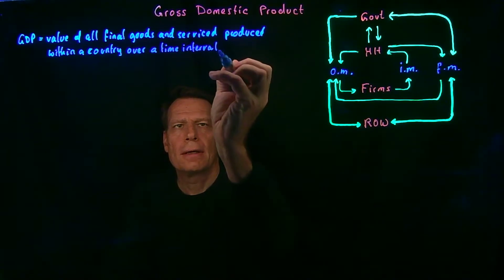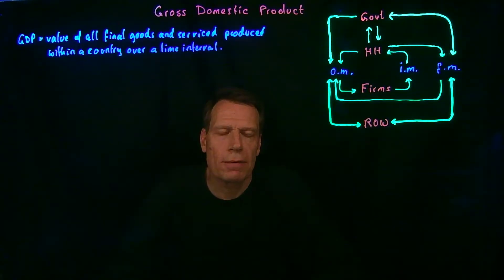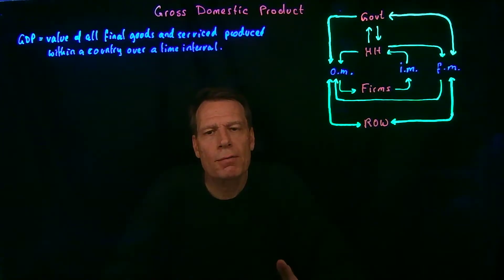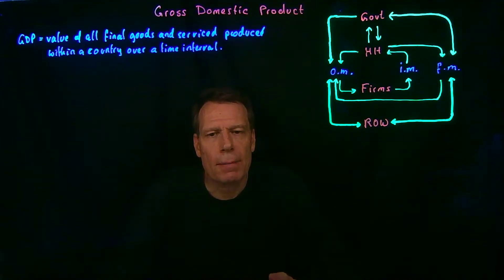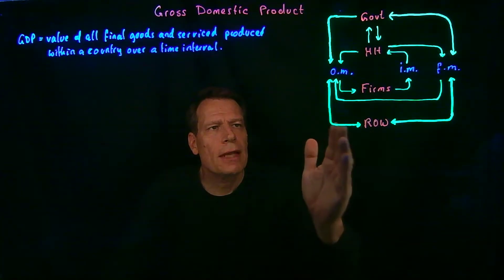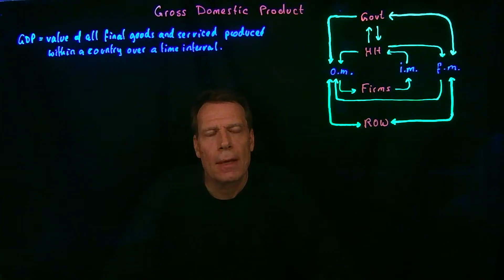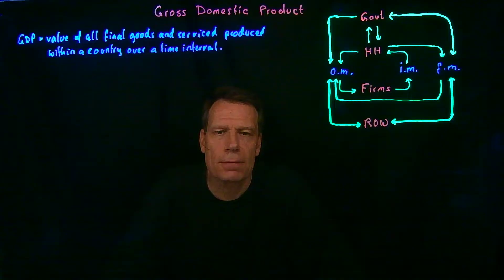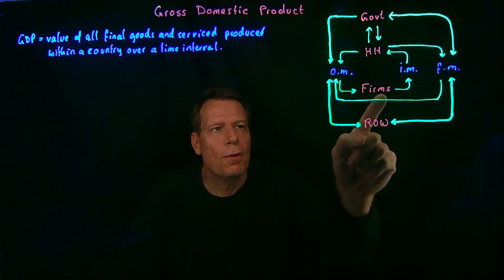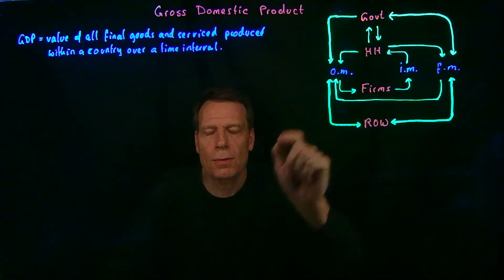That time interval could be every three months, every six months, or every year. The government reports GDP on a quarterly basis, every three months, and on an annual basis, every year. When we first put up the circular flow diagram at the very beginning of the course, we said that you could see GDP on the left-hand side of that diagram through all the purchases made in output markets for final goods and services. The people who make those purchases are households, firms, governments, and the rest of the world.